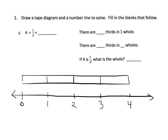When it says 4 divided by a third, they're asking us how many thirds fit into 4 wholes. So we can begin by figuring out how many thirds fit into 1 whole. We can either cut our thirds up here in the tape diagram or cut our thirds down here on the number line. And we can see that 3 thirds will fit into 1 whole.